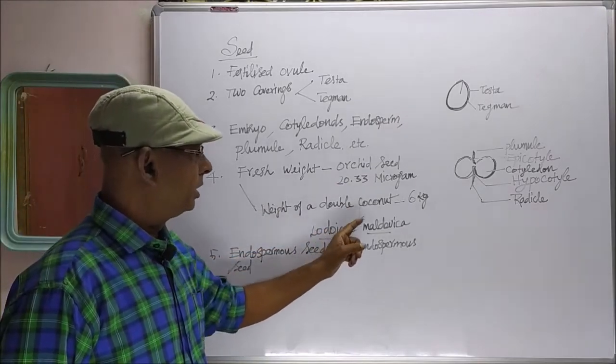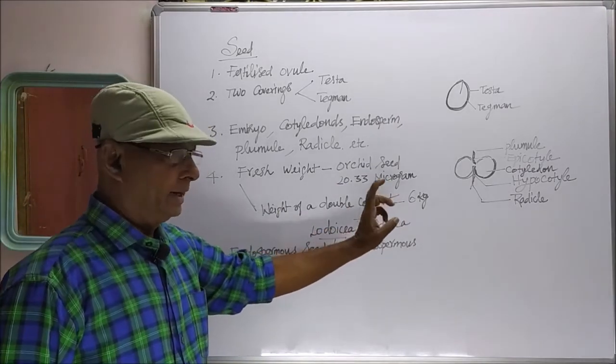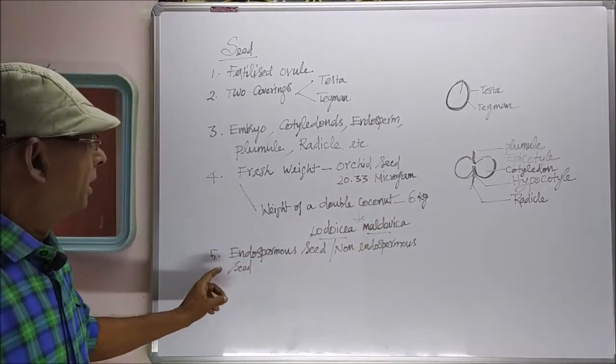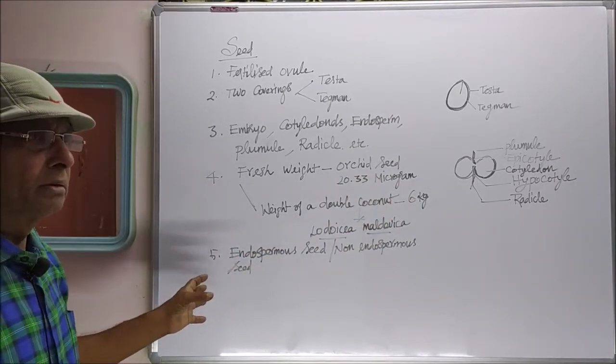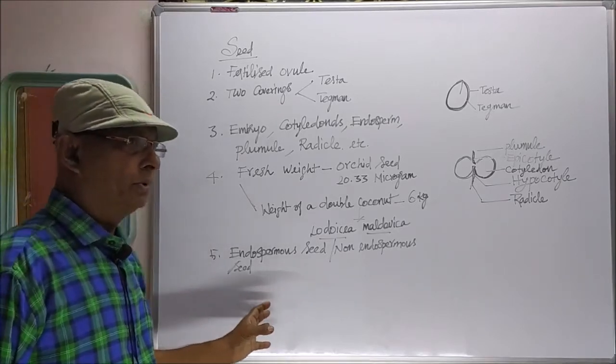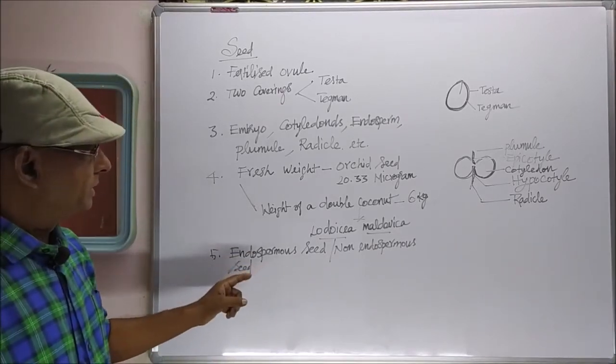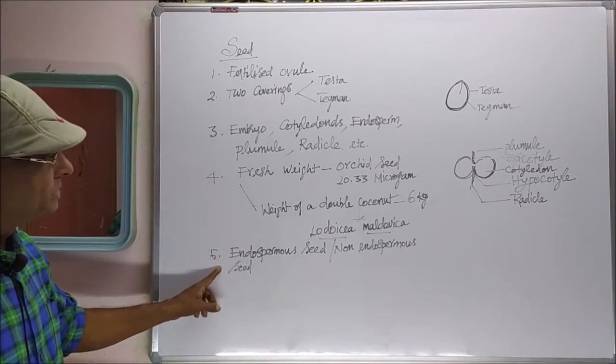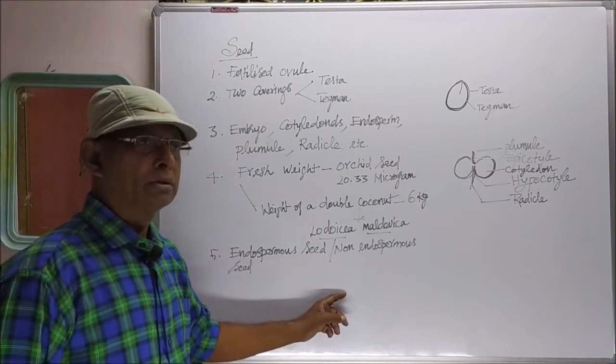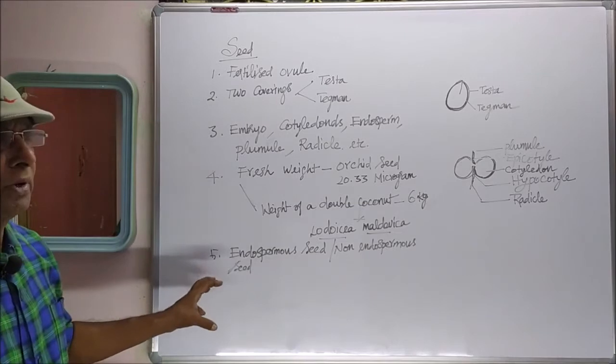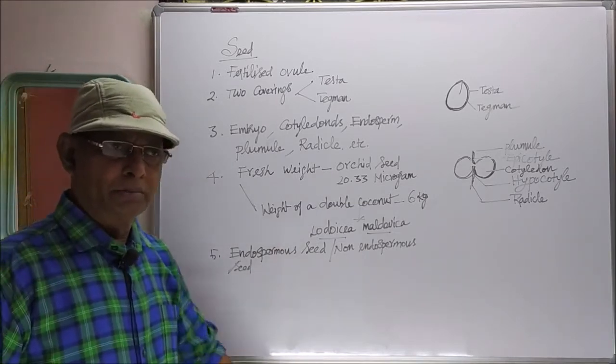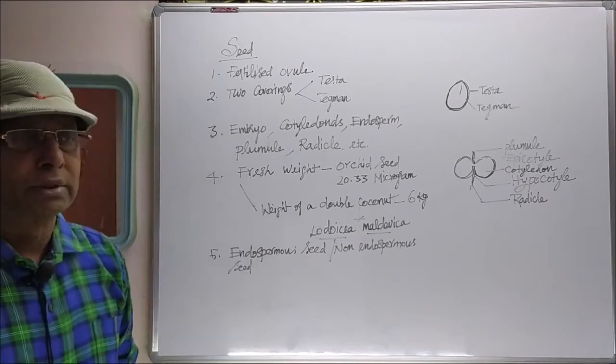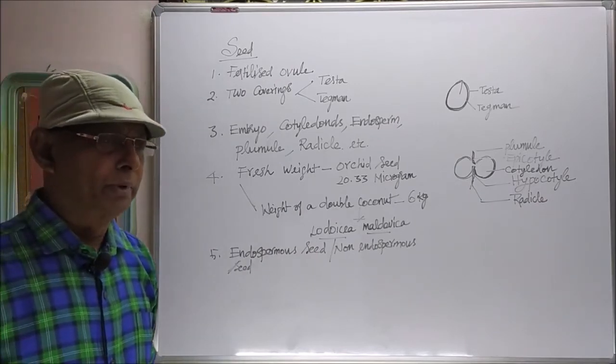According to the presence and function of endosperm, there are two types of seeds: endospermous seed and non-endospermous seed. In endospermous seed, endosperm stores the food material. Endosperm acts as a nutritive structure which stores the food material.